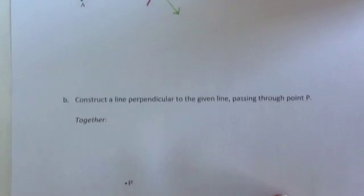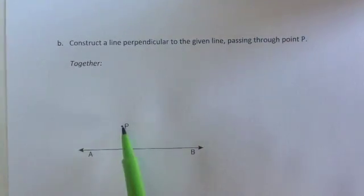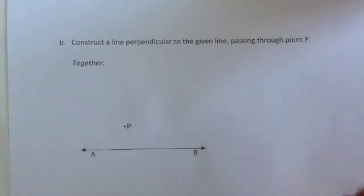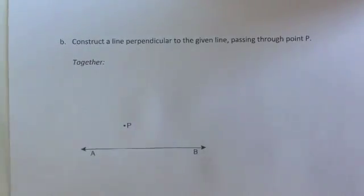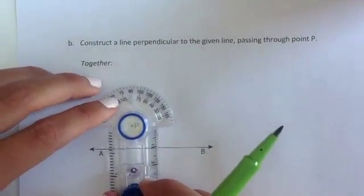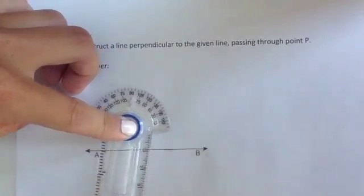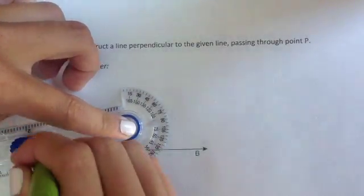Now moving on to the second example where we have a point P that's off of the line. This construction is identical to what we just did except that P is off of the line. In order to start this we're still going to put our center on P. We are still going to swing an arc, a smiley arc to cross AB twice.